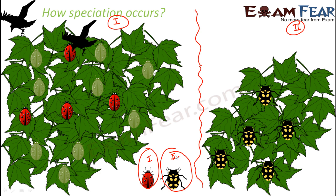Maybe sometimes due to some mutation it would have happened that the colour of the spots changed. Again over a period of time with some genetic drift or natural selection maybe the colour changed, or some accidental issues might have happened. So due to many factors, small changes can take place. And over a long period of time those changes can actually result in a different organism altogether. So now even if you keep these two locations nearby, these two beetles cannot interbreed. So this is how speciation occurs.